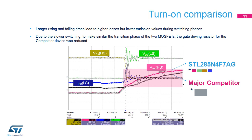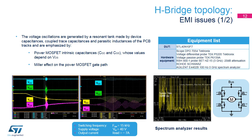Due to the slower switching, to make the transition phase of the two MOSFETs similar, the gate driving resistor for the competitor device was reduced. The voltage oscillation phenomena seen in the previous slides during the HS turn-on can also be observed in this circuit topology. The oscillations occur at the beginning of the Miller plateau, depending on the non-optimized capacitive ratio and on the Miller effect. The figures show the gate-source voltages VGS of the four devices of the H-bridge during the switching phases. The turn-on and turn-off phases are affected by both noise and oscillations. The zoom during the oscillations shows that the frequency of such oscillation is around 277 MHz, and matches the bandwidth where the highest EMI emission rate is registered, as shown on the right side of the figure.